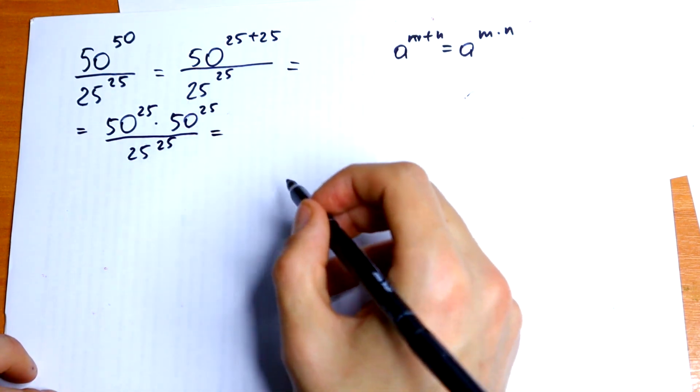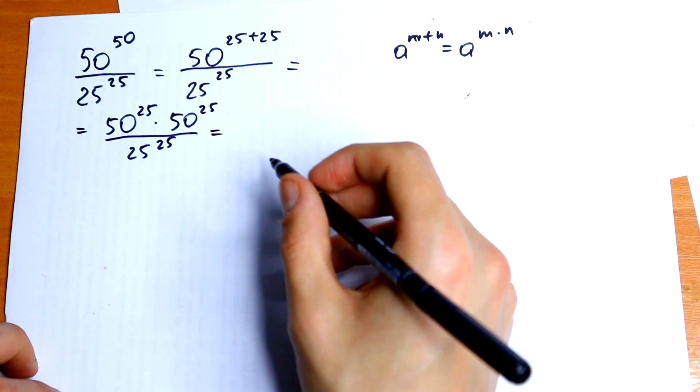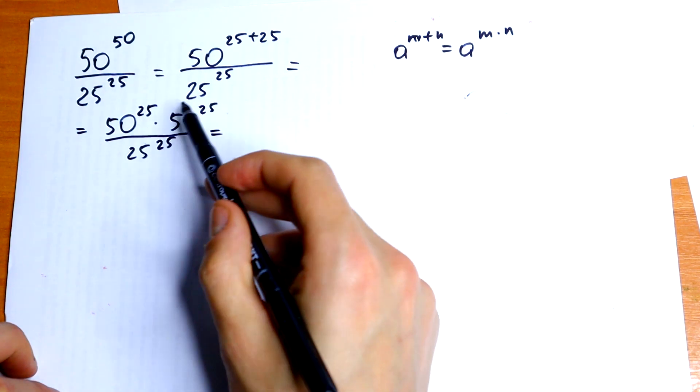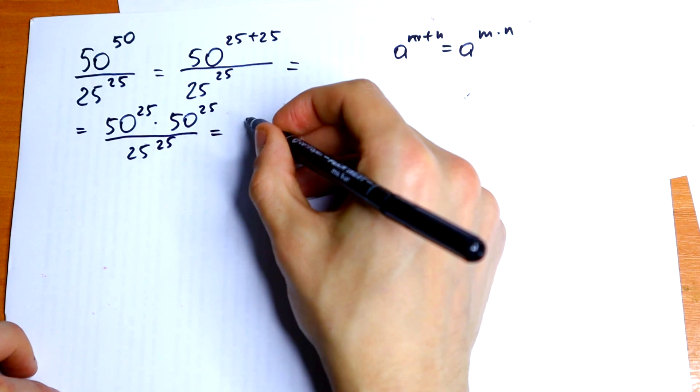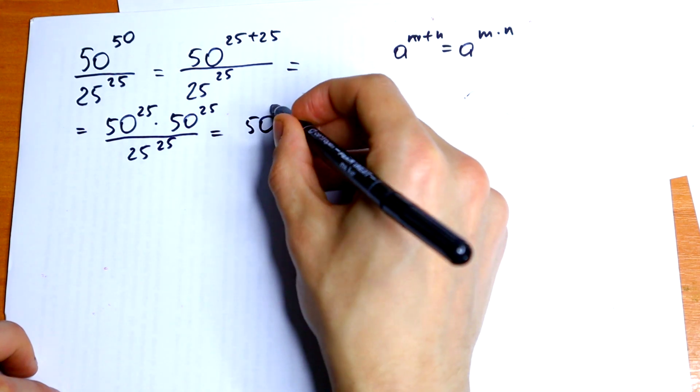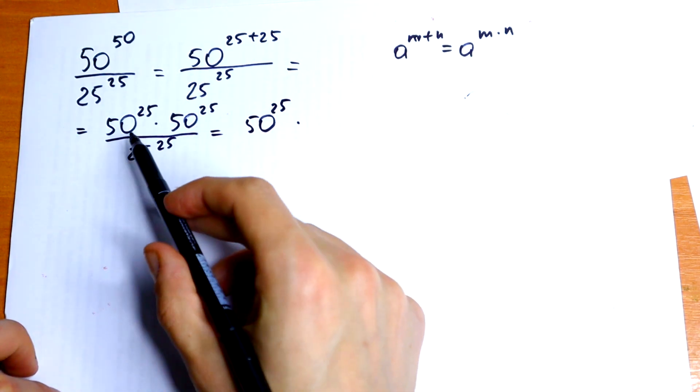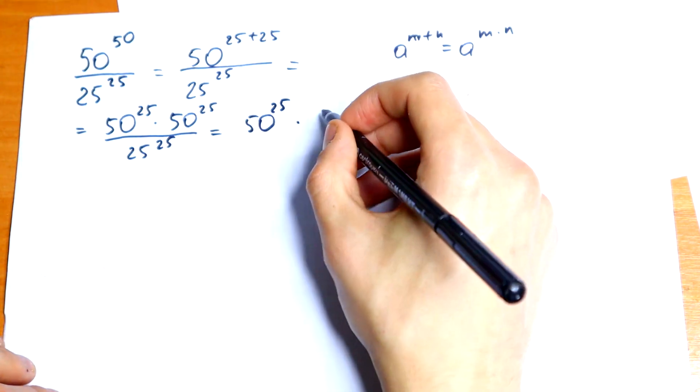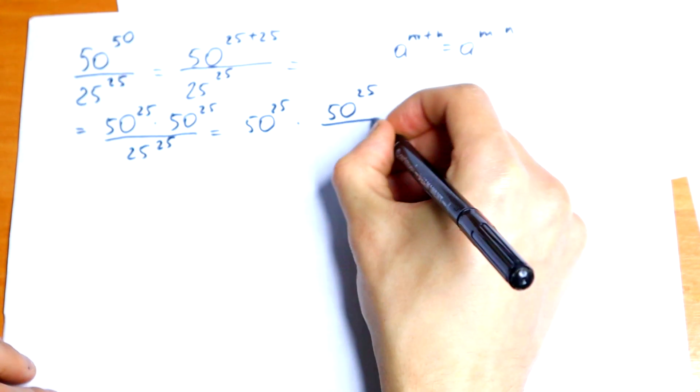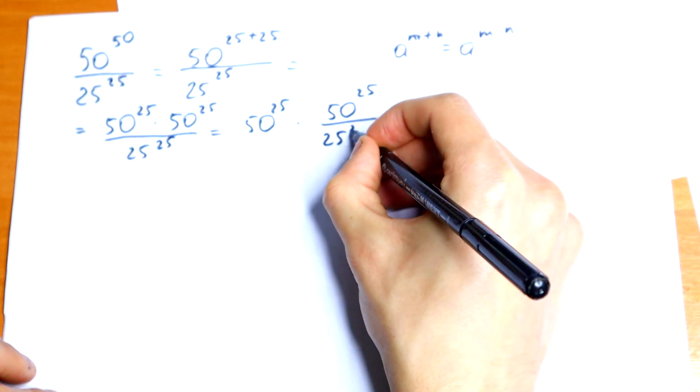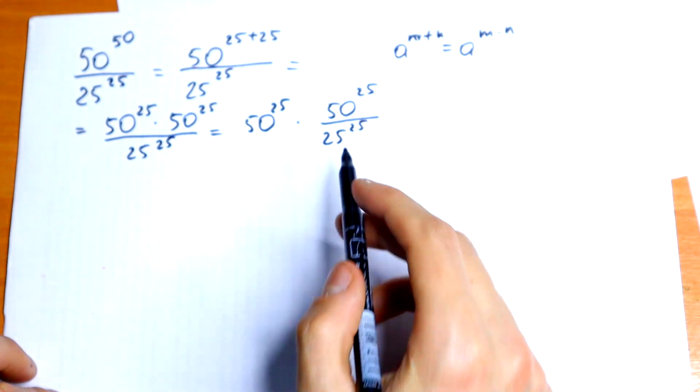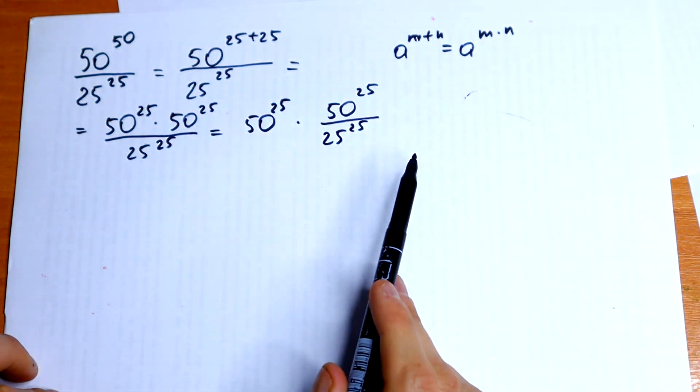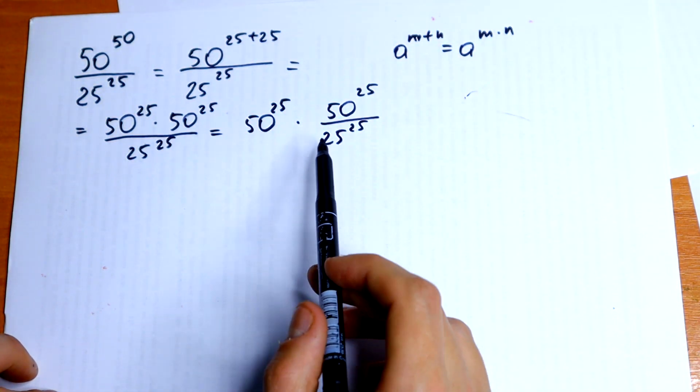What we gonna do next? We gonna do a little trick. So we will have 50 to the 25th power, I just let this on the left, and on the right I will get 50 to the 25th power all over 25 to the 25th power. Just write this like that. I can do this because this is a product.